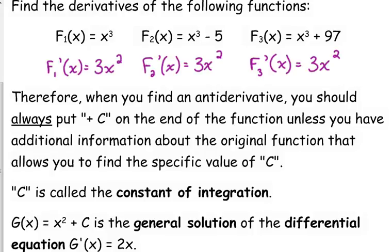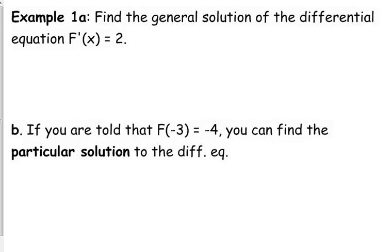We call something a general solution when it has the plus C — that's the general solution of the differential equation. For example, if G prime of x is equal to 2x, then its general solution is x squared plus C. It's general because we don't know the specifics or the particulars about it yet. So if we start with the differential equation F prime of x is equal to 2 — it's called a differential equation because it has a derivative in it — then F of x is equal to 2x plus C. That is the general solution.